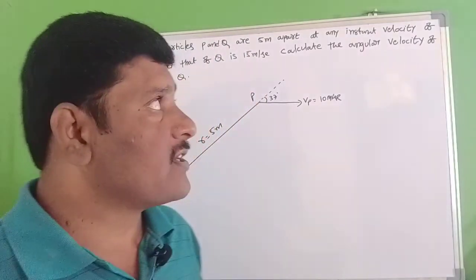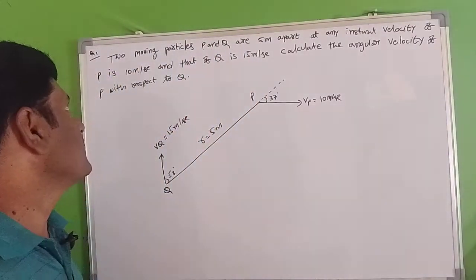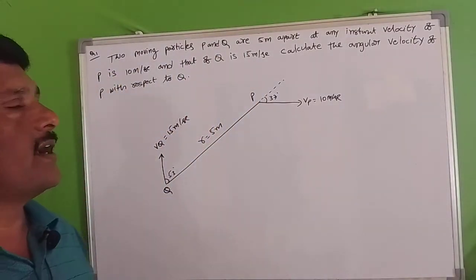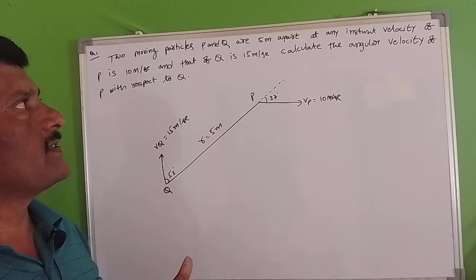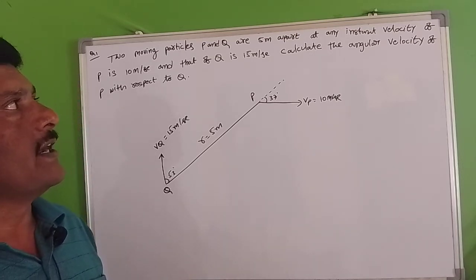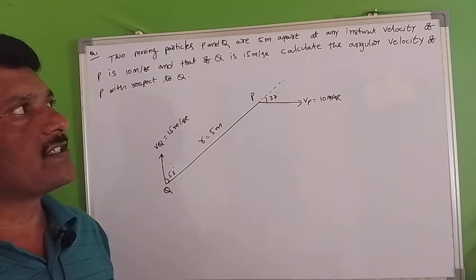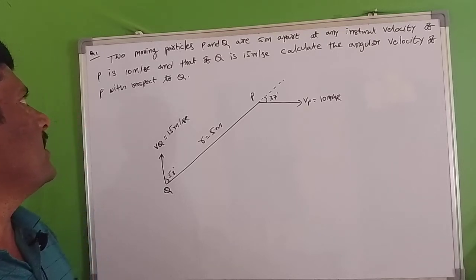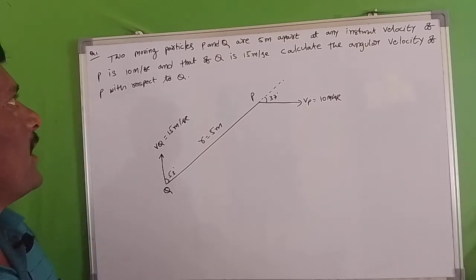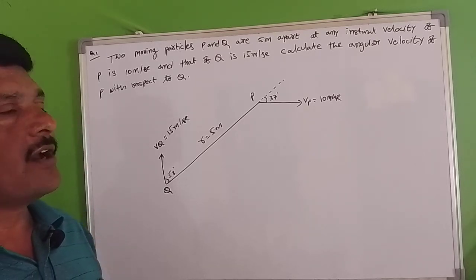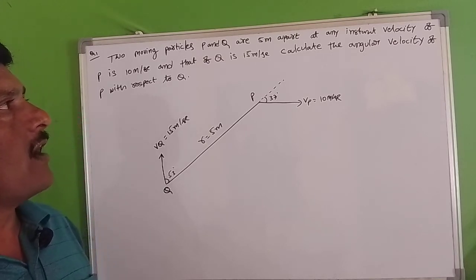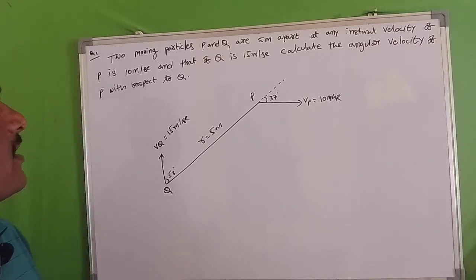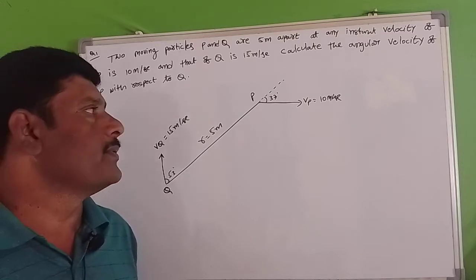Our first question: two moving particles P and Q are 5 meters apart at any instant. The velocity of P is 10 meters per second and that of Q is 15 meters per second. Calculate the angular velocity of P with respect to Q.